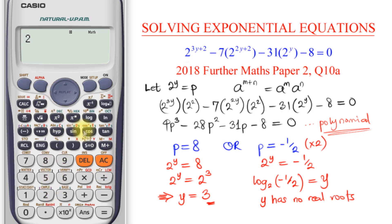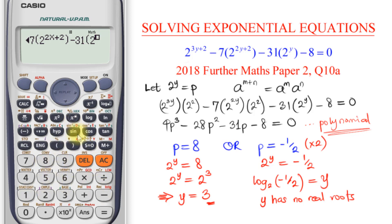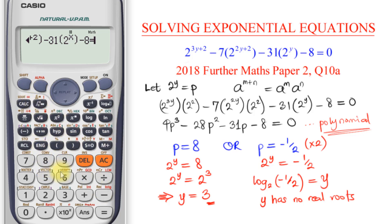I input: 2 raised to the power of 3x plus 2, go out of the power, minus 7, open bracket, 2 raised to the power of 2x plus 2, go out of the power, close the bracket, minus 8, equals 0. Always check to ensure you haven't input any wrong value.